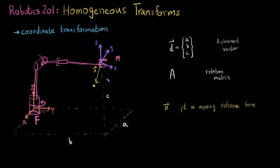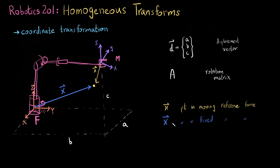Now let's say I have a point X which is expressed in the moving frame. There is an object that the robot needs to grab, and we know the position of the object with respect to the end effector — that's small x. We need to figure out the position of the same object with respect to the base of the robot, the fixed frame — that's capital X. We need to find the position of one object with respect to two different frames: the base of the robot, the end effector, and sometimes even the room.